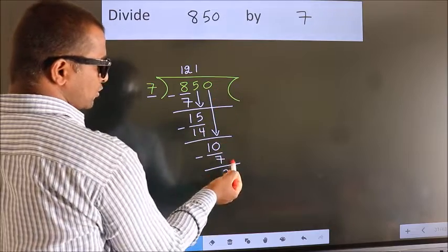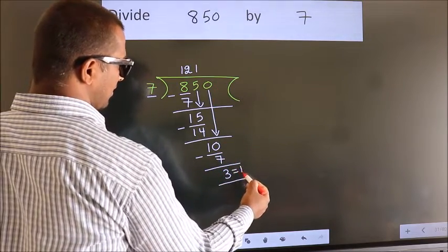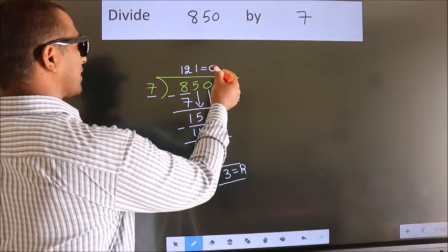No more numbers to bring it down. So we stop here. This is our remainder. This is our quotient.